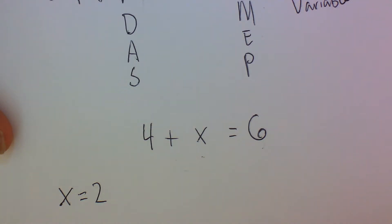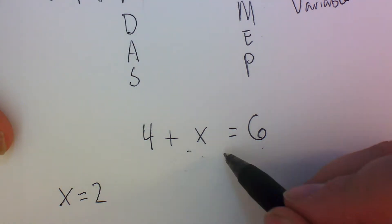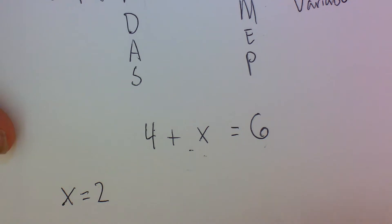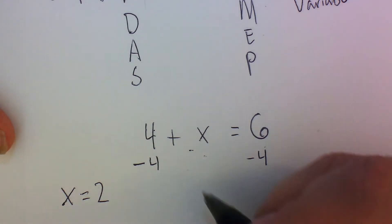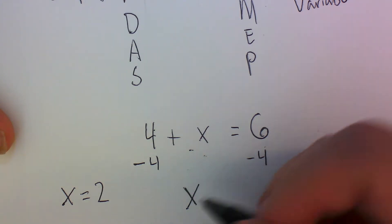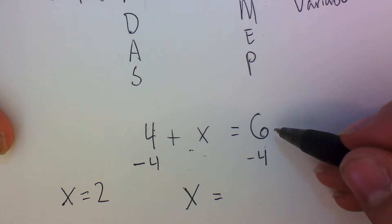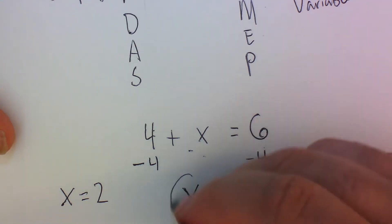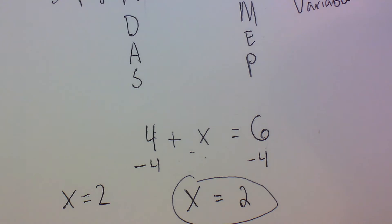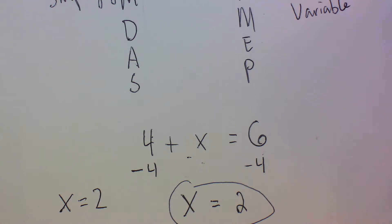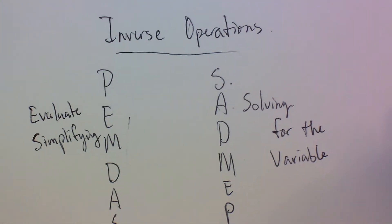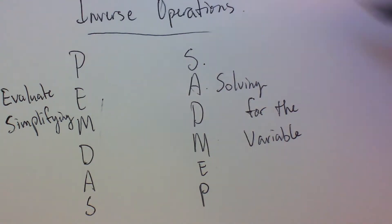I know that the opposite of addition is subtraction, so I want to keep my variable positive. I see there is a positive 4, so I subtract that from both sides. This makes a zero and leaves x by itself. Now I have 6 minus 4, which equals 2. That's how you use inverse operations, and you use this principle on one-step, two-step, or even many-step equations — the main idea is that inverse operations are used to solve for the variable.